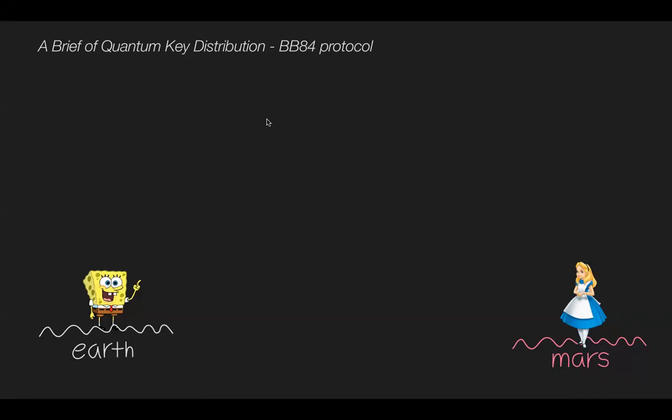Hi, today I will briefly explain the BB84 quantum key distribution protocol. First of all, Bob lives on Earth and Alice lives on Mars. They wanted to do secure communication with sharing quantum keys.